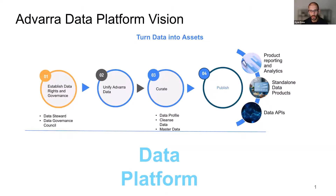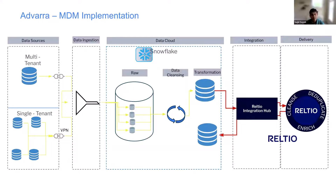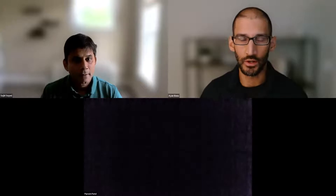Ayan asks how RELTO Integration Hub fits into the overall architecture diagram. Sajid explains: Advera has done a lot of growth through acquisitions, so sources include multi-tenant and single-tenant transactional databases. The objective was to ingest data into a raw zone where governance, cleansing, and profiling happened. After that, transformation is done within the Snowflake layer, and then through RELTO Integration Hub we move it out to RELTO.